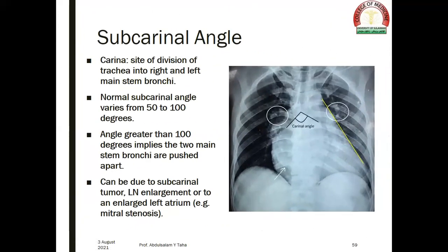The subcarinal angle: the carina is the site of division of the trachea into right and left mainstem bronchi. The normal subcarinal angle varies between 50 to 100 degrees. An angle greater than 100 degrees implies the two mainstem bronchi are pushed apart. This can be due to a subcarinal tumor, lymph node enlargement, or an enlarged left atrium, as in mitral stenosis.